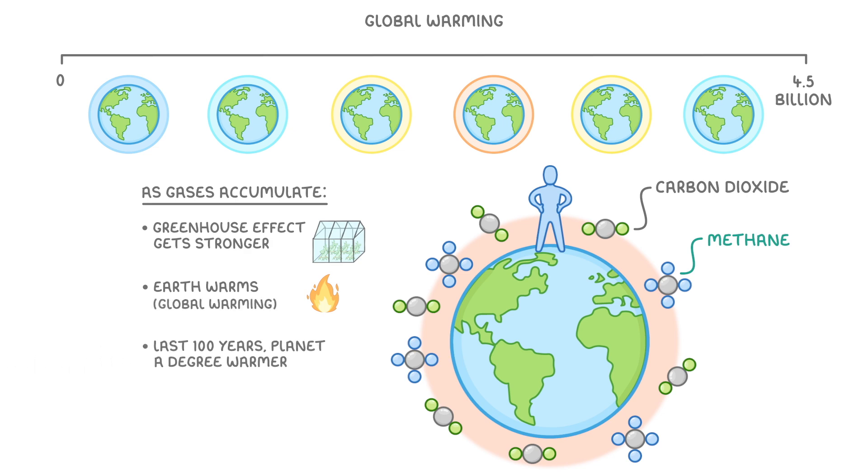In the past 100 years, our planet has already got almost a whole degree warmer, and it's on track to rise a lot more if we don't do something major to stop it.